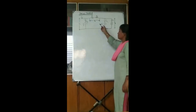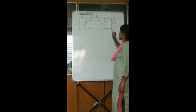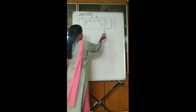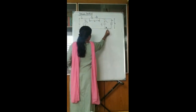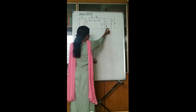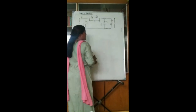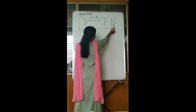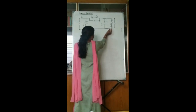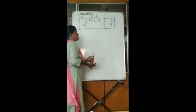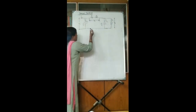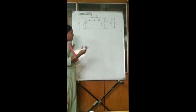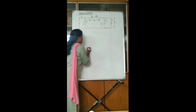Before we get into the derivation, let us start with the phasor diagram. Coming to the phasor diagram, these two are in parallel, so the voltage across the capacitance will be equal to the voltage at load. This voltage is Vr — the same voltage will appear across the load as well as across the capacitance. We will take Vr as our reference voltage.